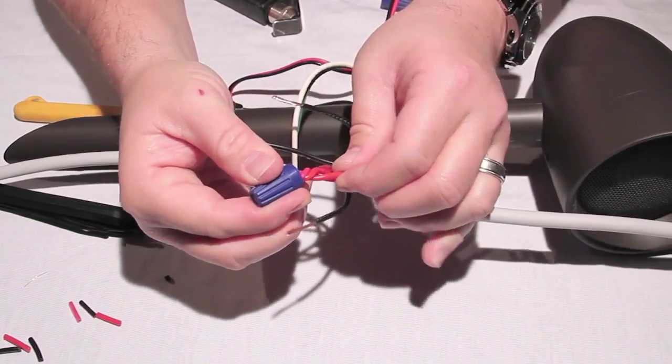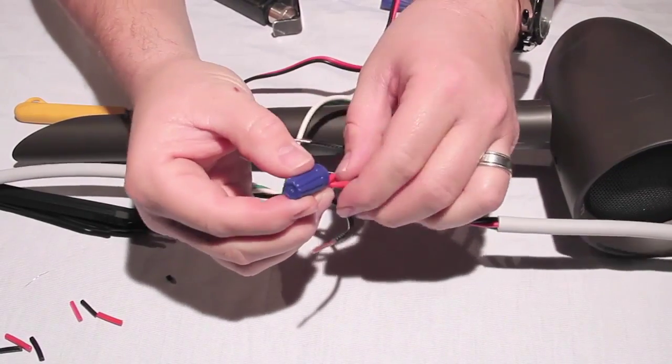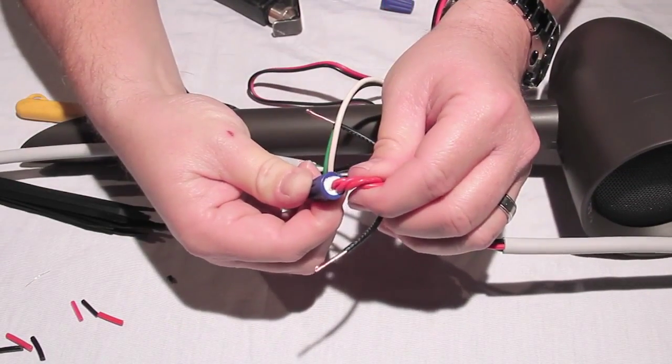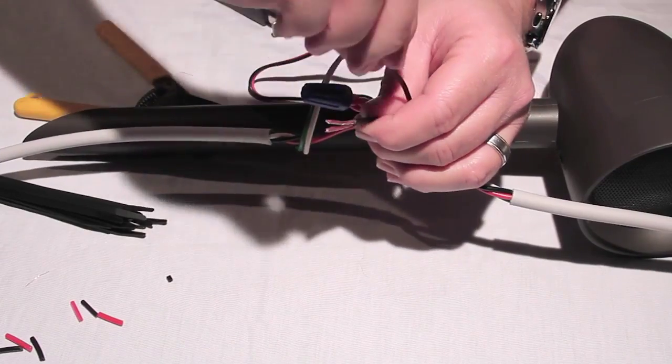After the wire nut has been twisted securely onto the wires, pull on each wire to make sure they are securely held by the wire nut. Now repeat this process for the black wires.